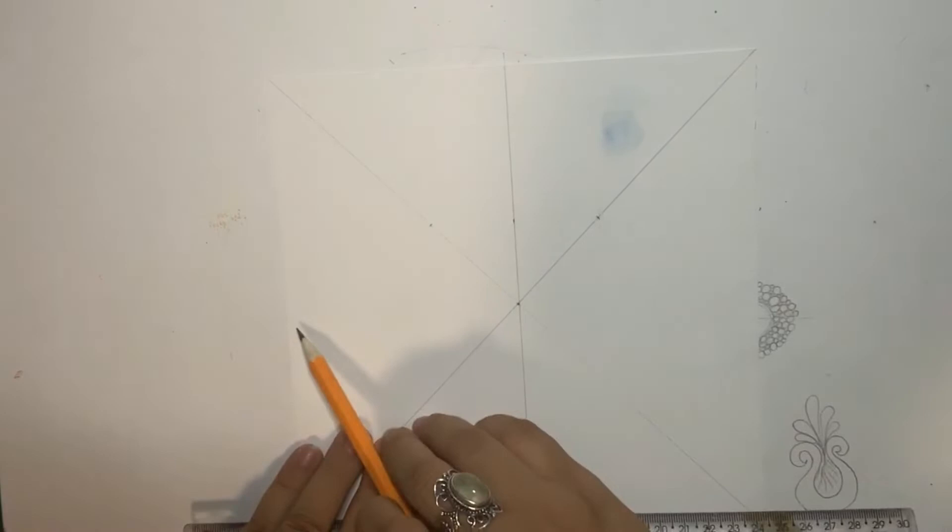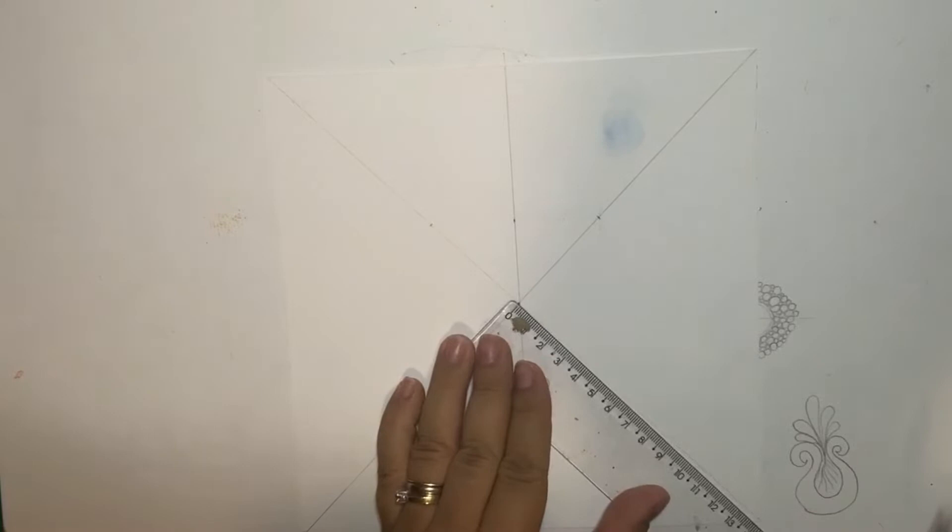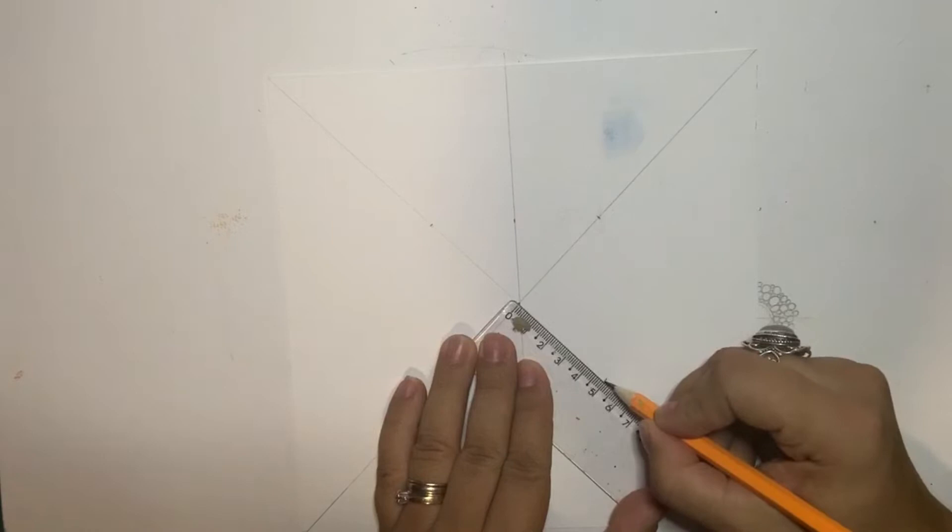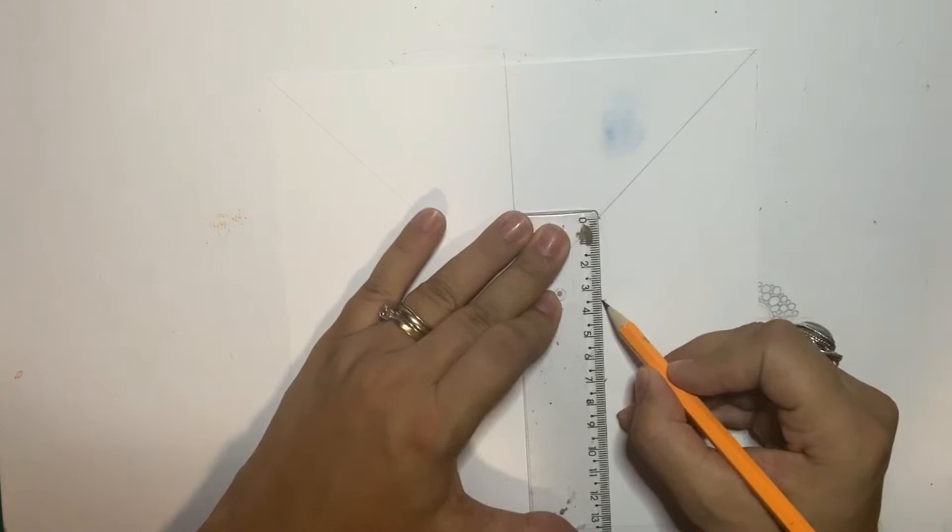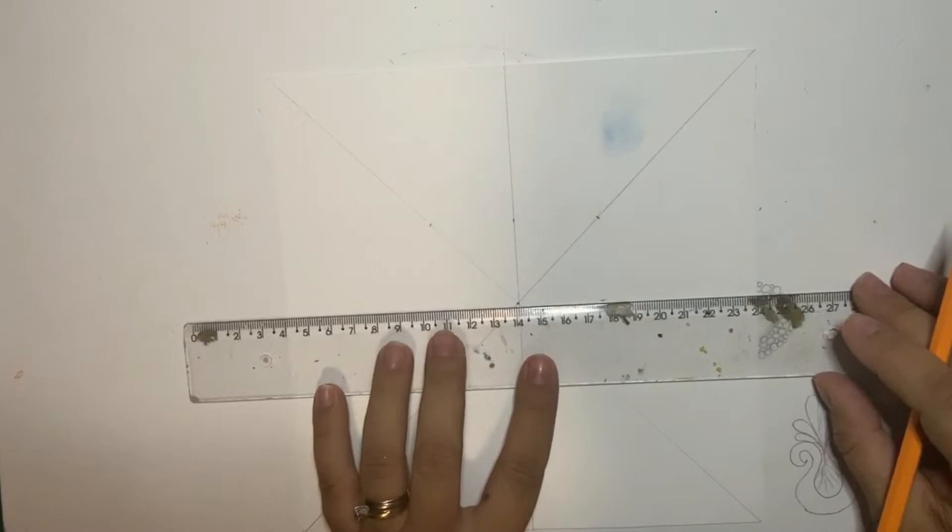But now I need to make a horizontal line to make that division. So again, from the center I place a ruler like this aligned with zero. I mark also five centimeters and then the distance between these two points should be also seven.